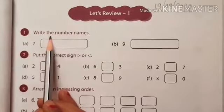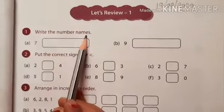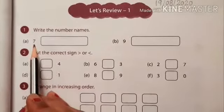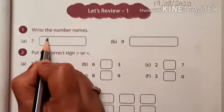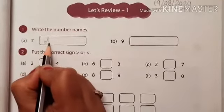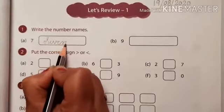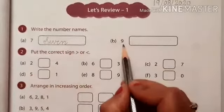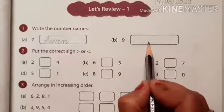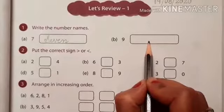Write the number names. First number is 7. So you write here spelling of 7: S-E-V-E-N, 7. Now next number is 9. So you will write spelling of 9.